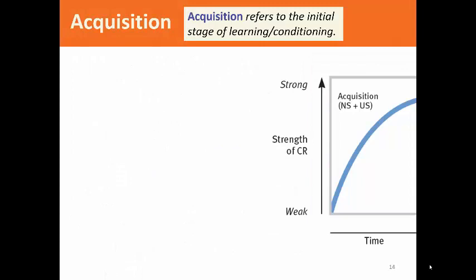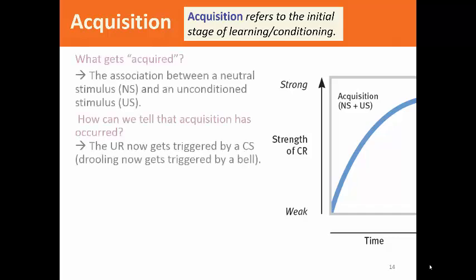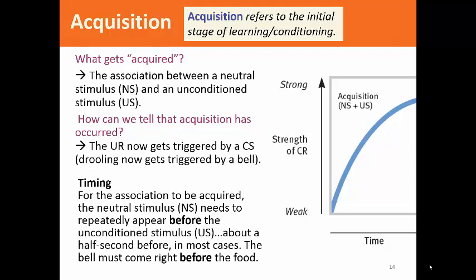When we talk about learning, there are different phases. Acquisition refers to the initial stage of learning or conditioning — that's when the association between the neutral stimulus and the unconditioned stimulus starts to transpire, by pairing the bell with the food. We know acquisition has occurred when the unconditioned response gets triggered by the conditioned stimulus, so the dog starts salivating when he hears the bell. For the association to be acquired, the neutral stimulus needs to repeatedly appear before the unconditioned stimulus — you always have to ring the bell before you present the food, about a half a second before in most cases. The timing is important: the bell must come right before the food.